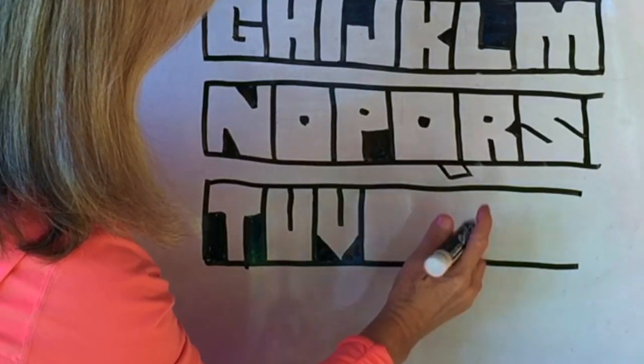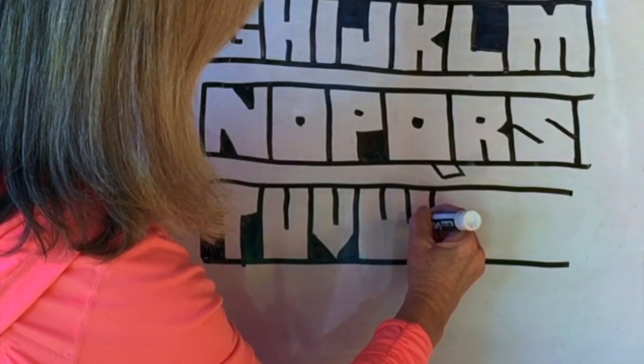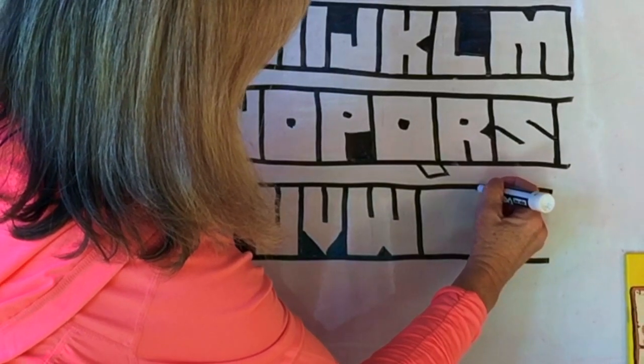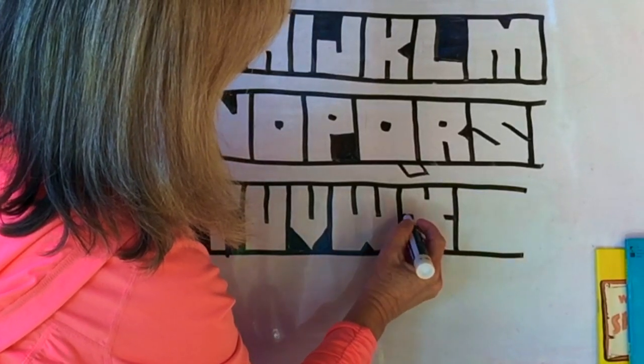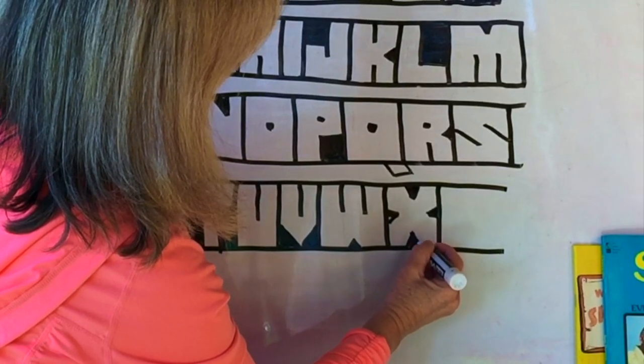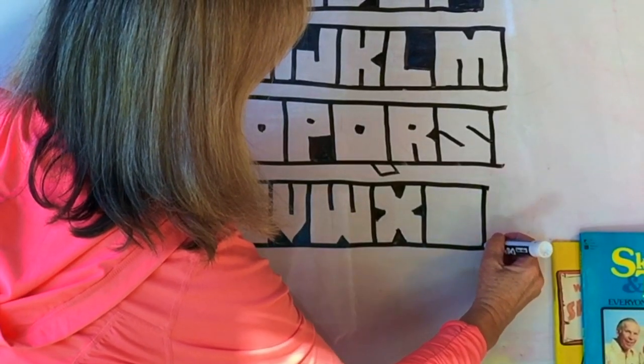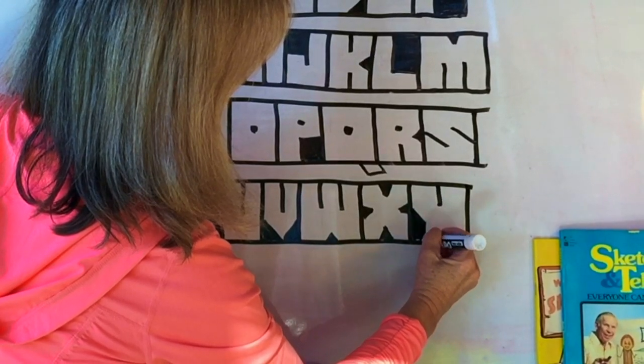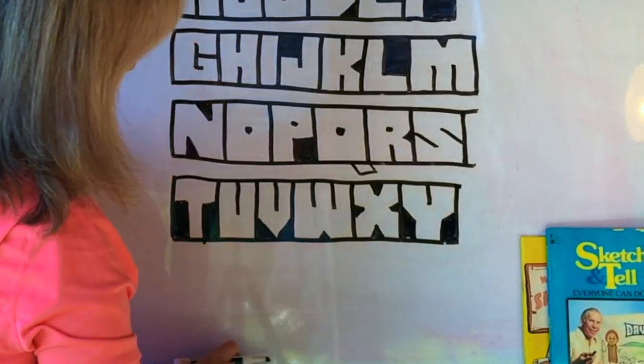Now W has to be a bit wider just like the M but you do the lines from the top and I like to put a little triangle. And then X. Some people do an X just like this but I like to do a little triangle just to make it look a little bit more like an X and the kids seem to enjoy that as well. And then a Y down the middle and then I just color in the edges like this.